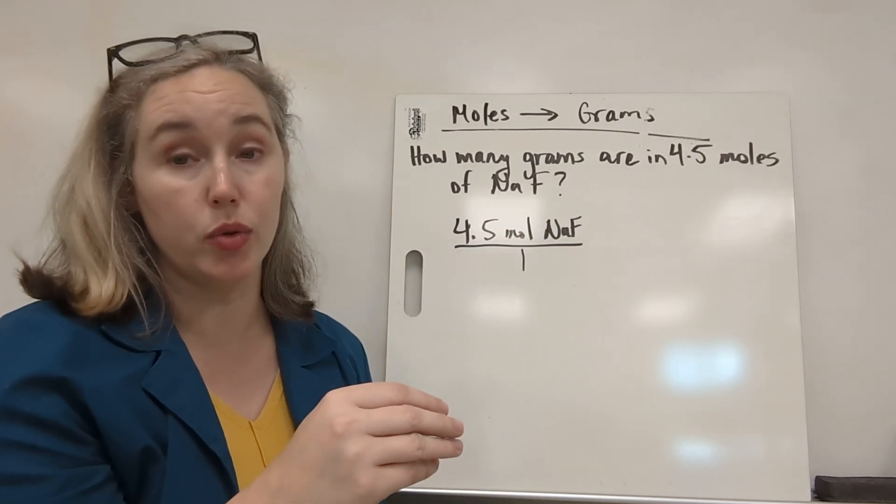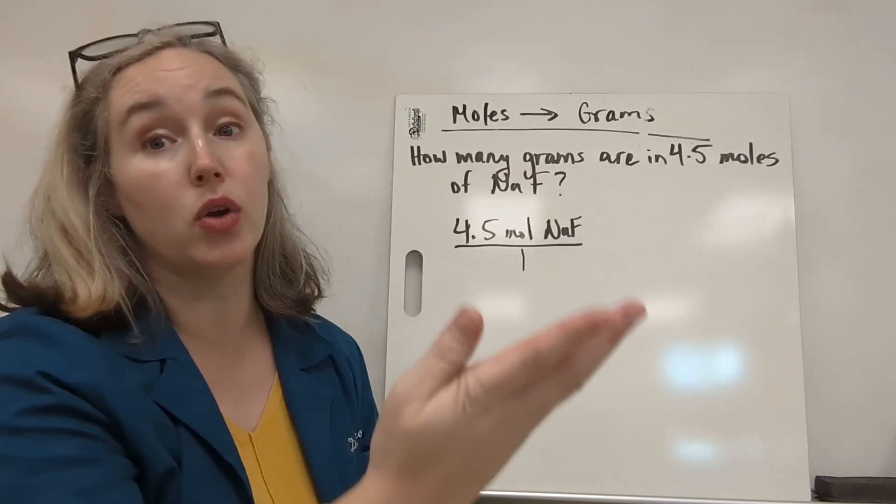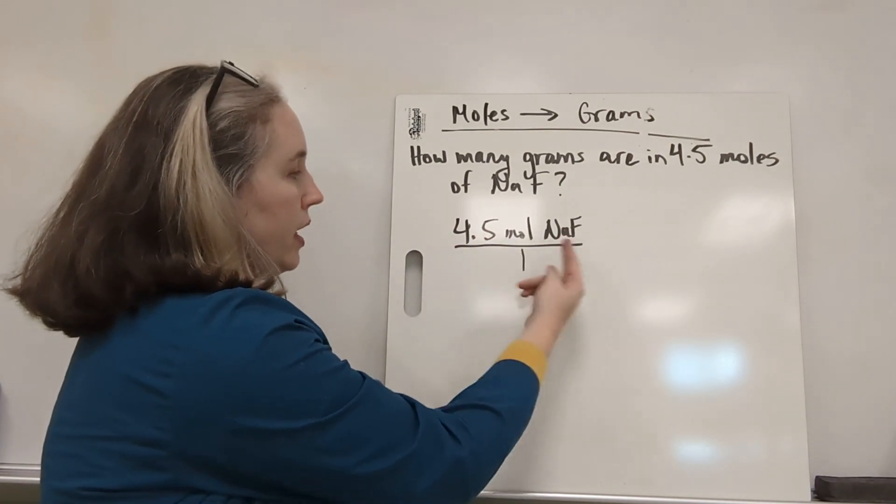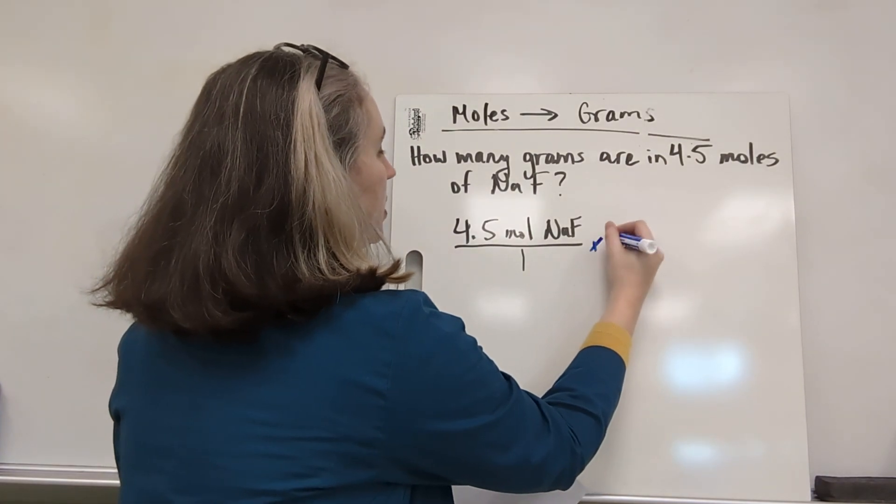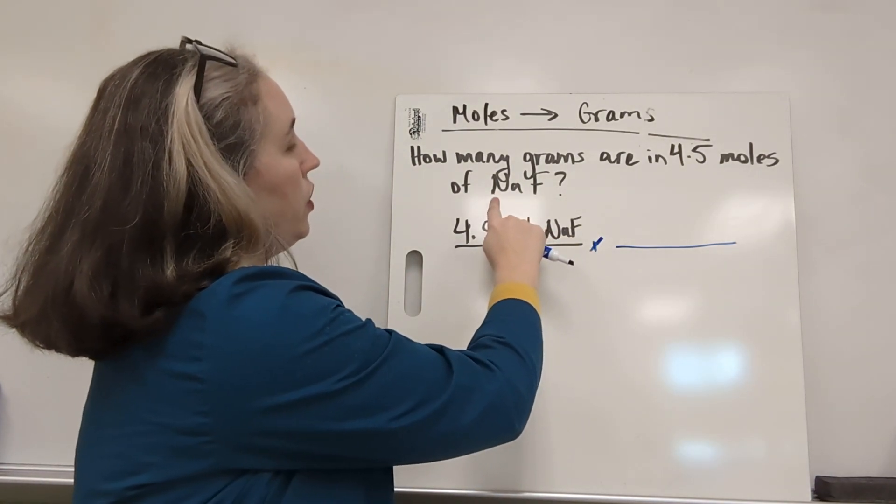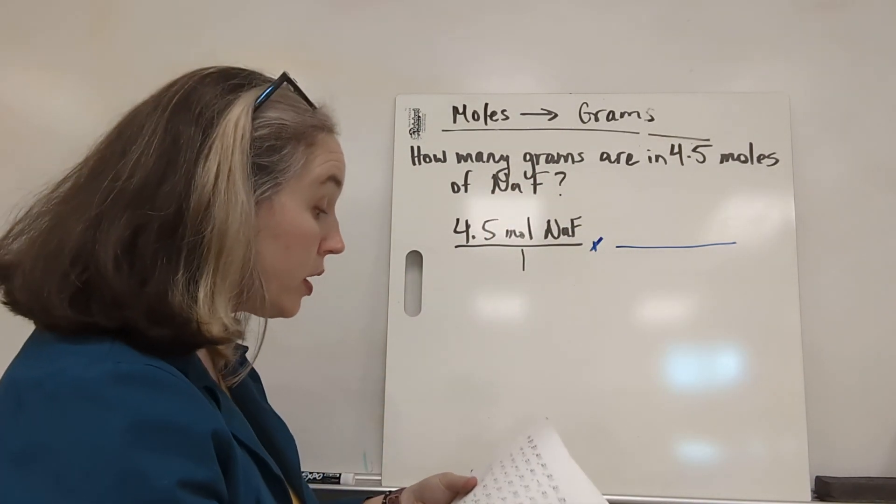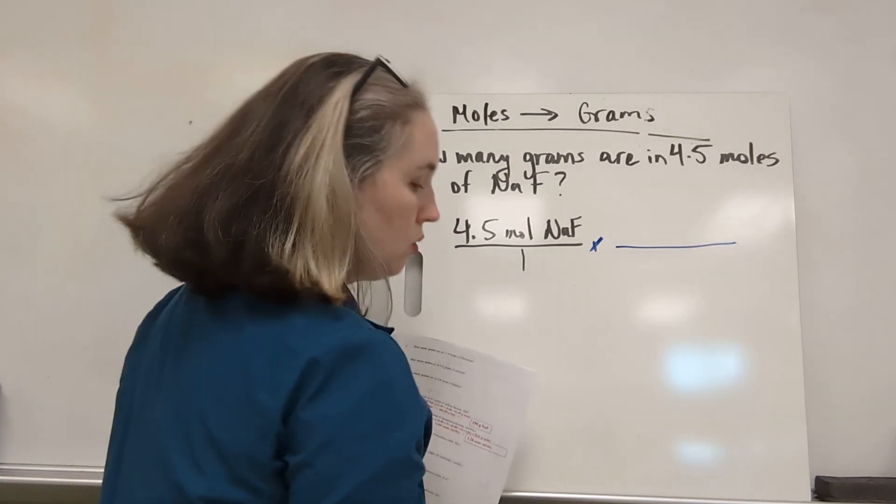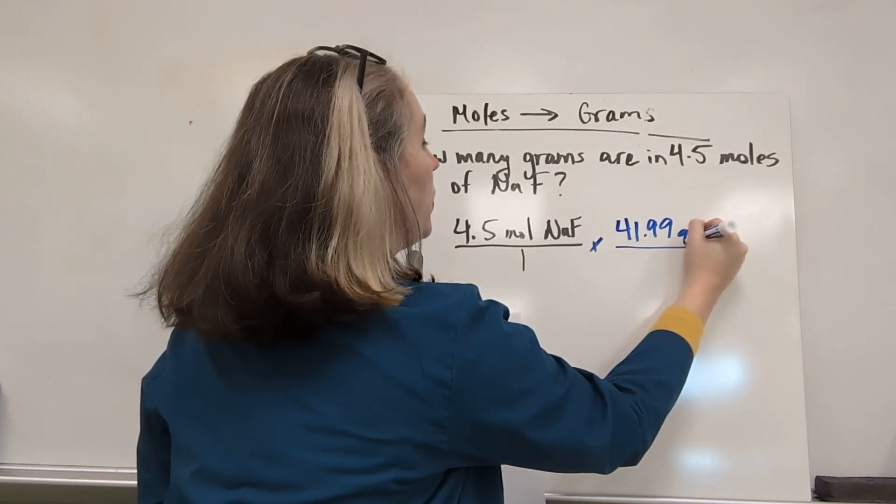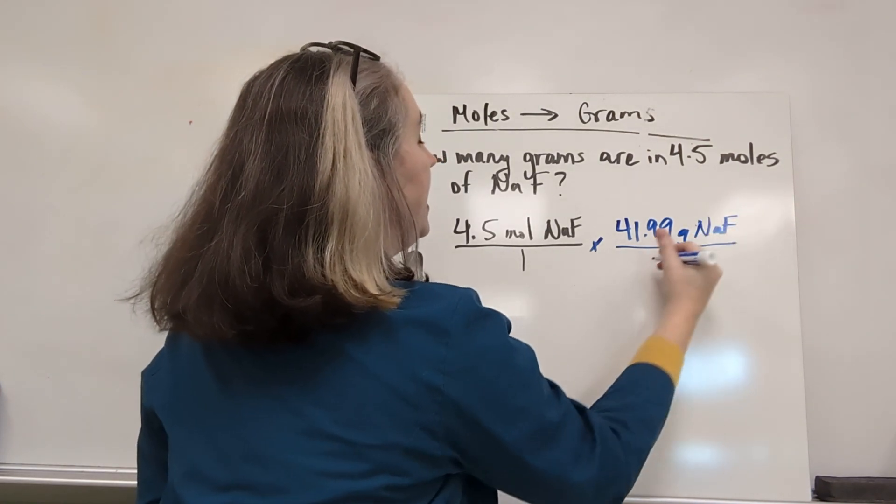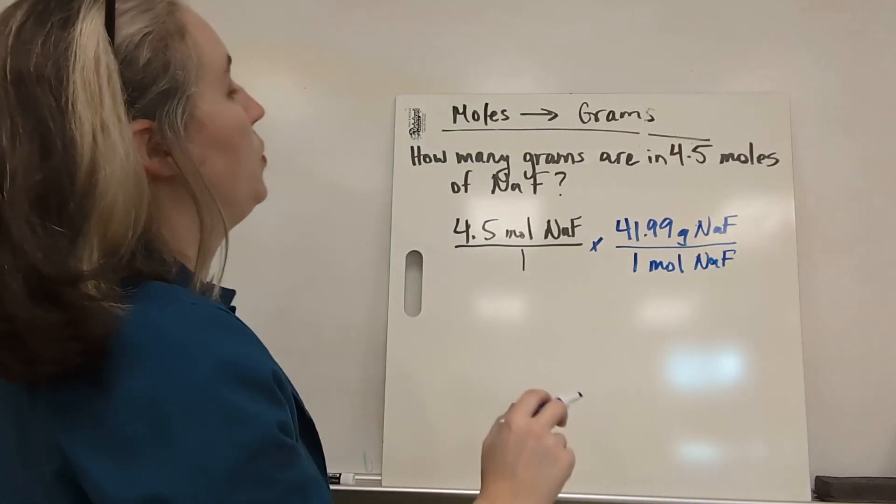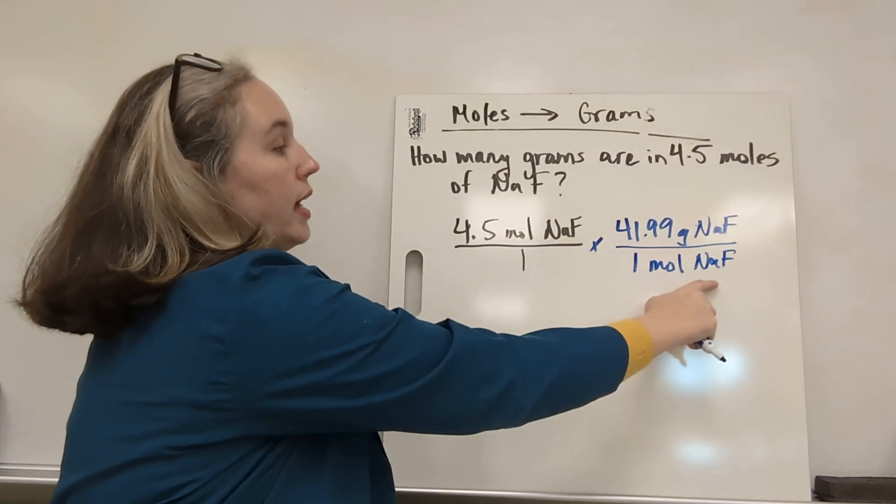So this is a new addition to how we write units. You actually have to write the element or compound next to the unit. So 4.5 moles of sodium fluoride over 1. And then when we set up our second fraction, again, we have to find the molar mass. And when we take the molar mass of sodium and add it to the molar mass of fluorine, we get 41.99. 41.99 grams of sodium fluoride in 1 mole of sodium fluoride. We set it up this way so that moles of sodium fluoride cancel out.